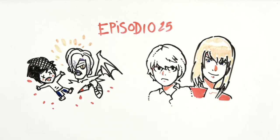Five years later, Near and Mello, two intelligent young men who were raised as successors to L, try to find Kira.